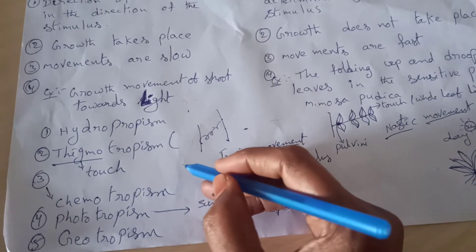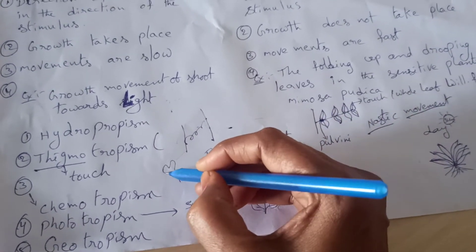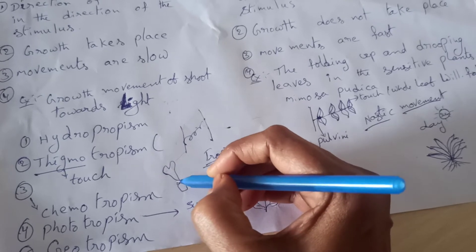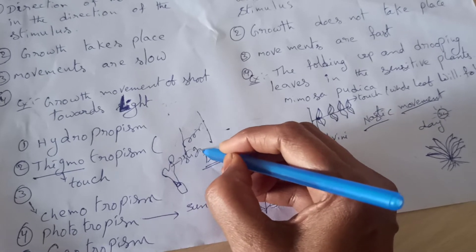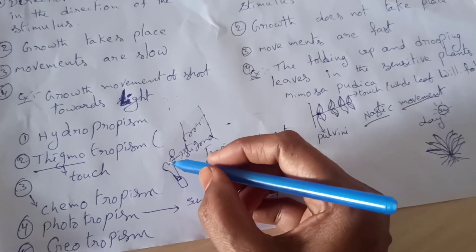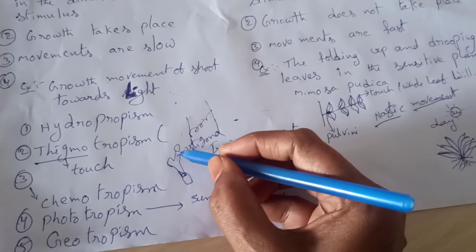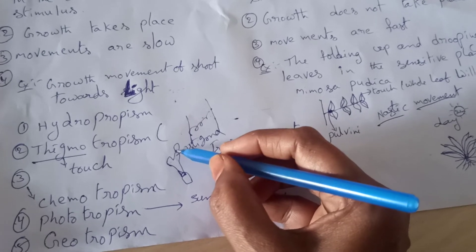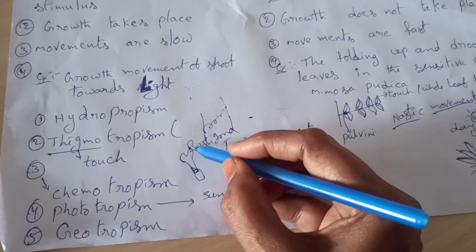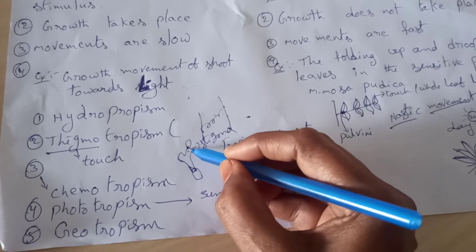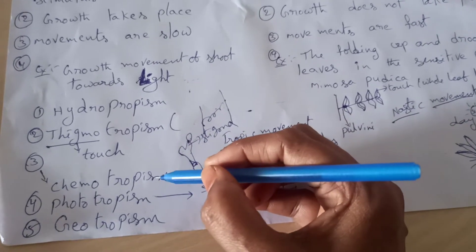Chemotropism: we see that we have a stigma in a flower. There are some chemicals to attract pollen grains, which then germinate. That's why it is called Chemotropism — chemicals are the stimulus, and movement towards the chemicals gives it the name Chemotropism.